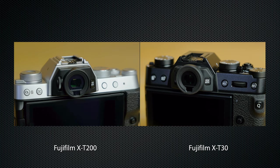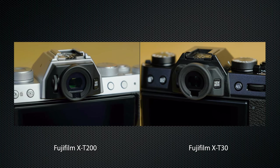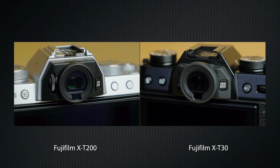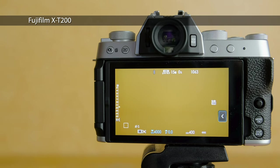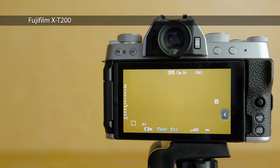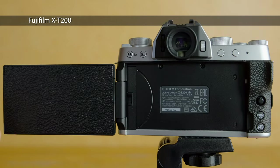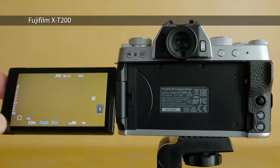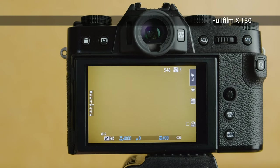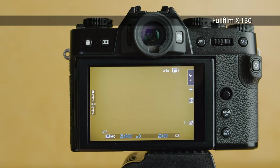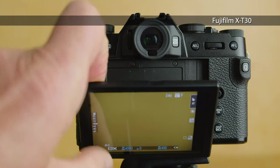The OLED viewfinder specs are the same: 0.39 inch, 2.36 million dots, diopter adjustment on the left, and mode selector on the right. The X-T200's 3.5-inch, 2.7-million-dot LCD has a 16:9 ratio — best for video. It rotates around to face front, tilts all the way up and down, and closes to the body. The X-T30's 3-inch, 1-million-dot LCD has the standard stills 4:3 ratio and tilts up and halfway down.